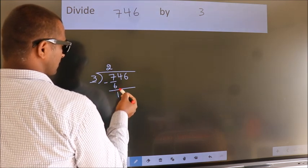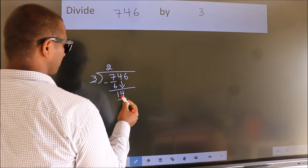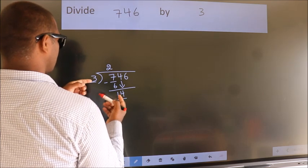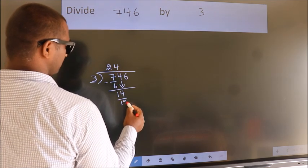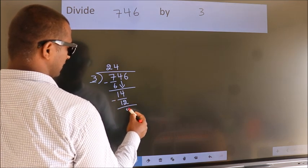After this bring down the beside number. So 4 down. So 14. A number close to 14 in 3 table is 3 4's 12. Now we subtract. We get 2.